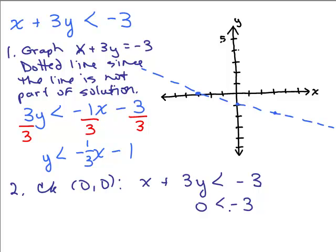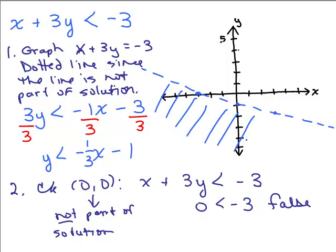And is that true or false? Is 0 less than negative 3? Nope. False. So that's not part of the solution. So I do not want to shade that part of the line. I do not want to shade the part of the line where 0, 0 is. I want to shade the other side of the line.